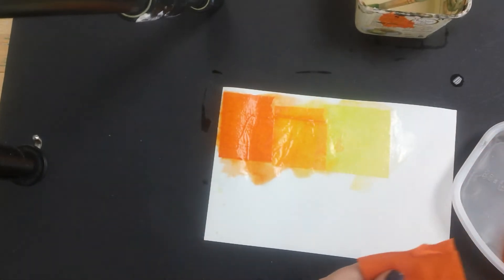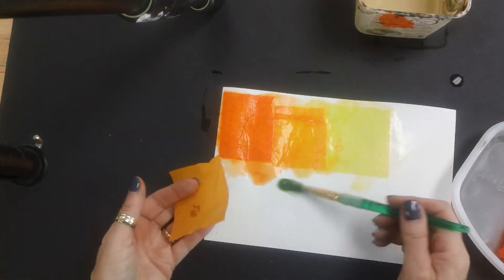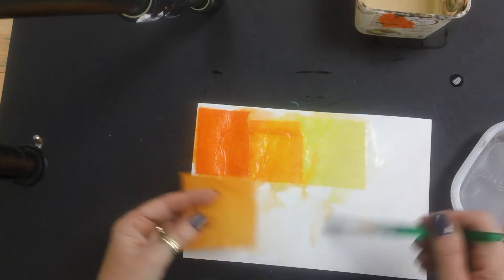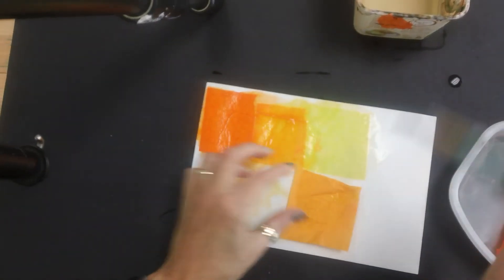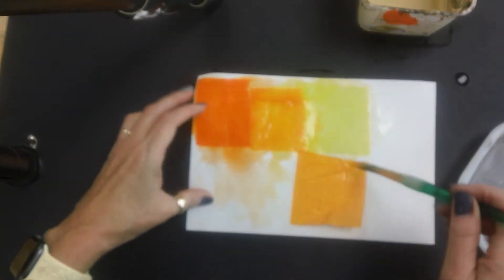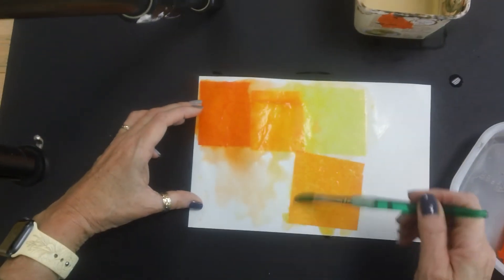And we're just going to keep going along like this. Try not to overlap your papers. Just try to keep them one at a time. Now edges of the paper might overlap. That's okay.